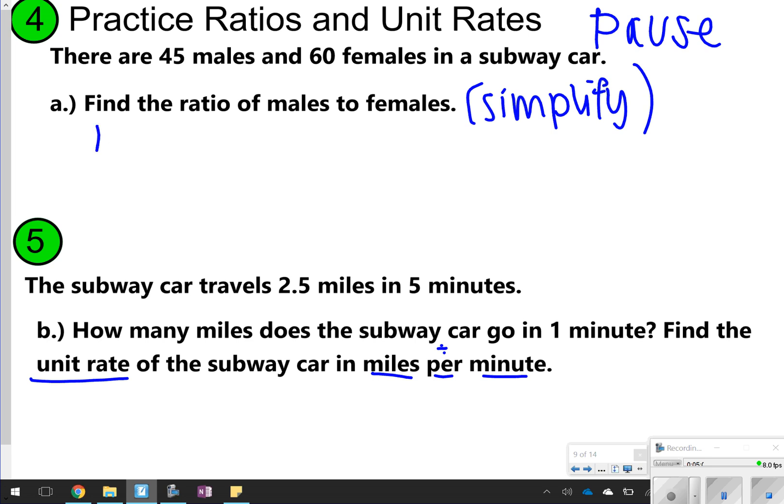So number 4, we've got the ratio of males to females. Since males is listed first, I'm going to write 45 first, and females is listed second. I'm going to write 60, that number for females second. I do know that 45 and 60 can be simplified. The greatest common factor there is 15. When I simplify it by 15, I get 3 fourths. So my answer for number 4 is 3 fourths.